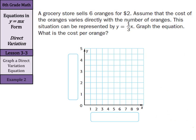We can assume that we're going to start at 0, 0. Makes sense: 0 oranges, 0 dollars. On the bottom here, this is going to be our number of oranges. And going up, this is going to represent our cost.